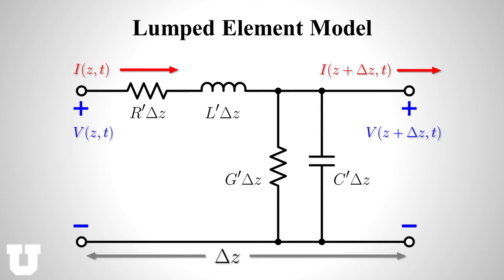Now another very important feature of the lumped element model is that it's far more instructive to think about this in terms of per unit length parameters. So these are called the characteristic parameters of the transmission line.